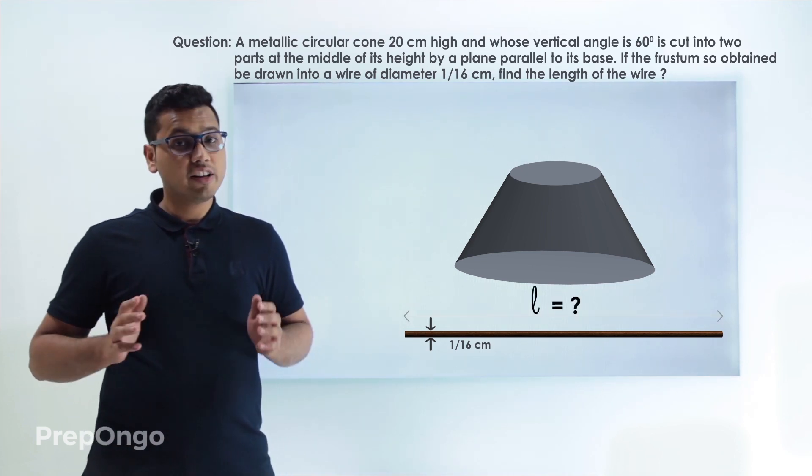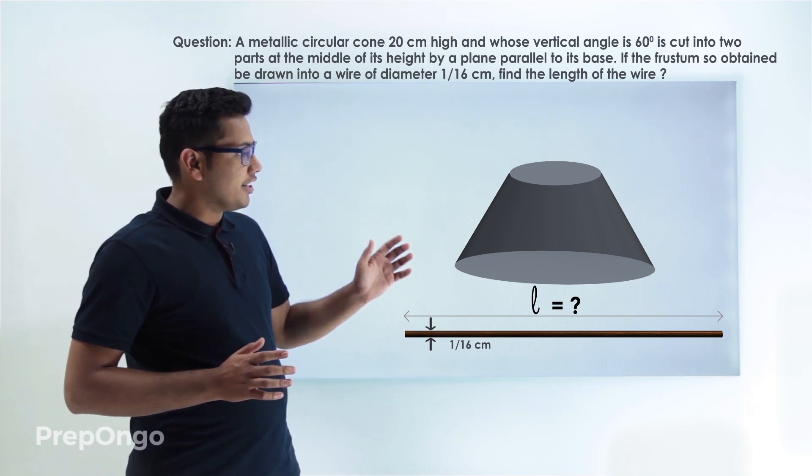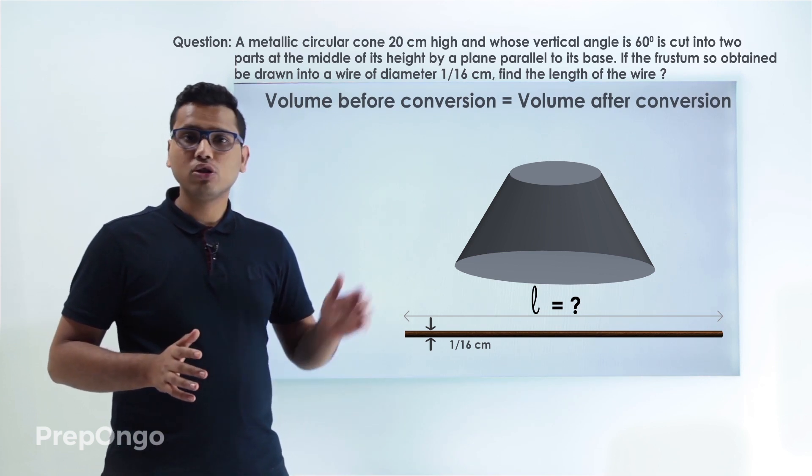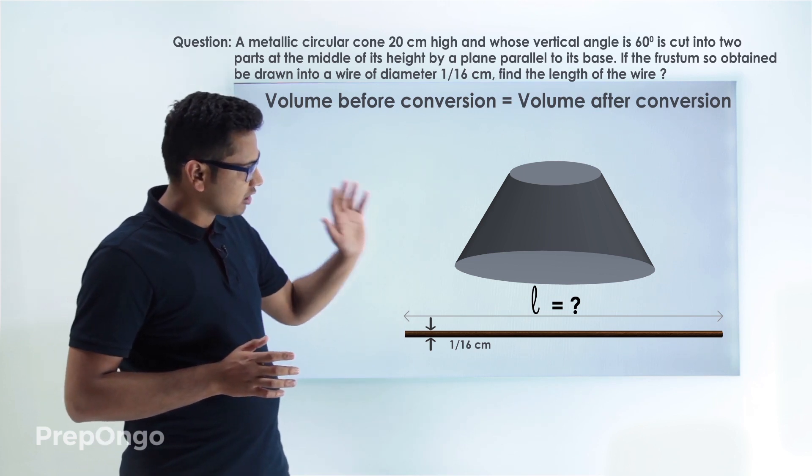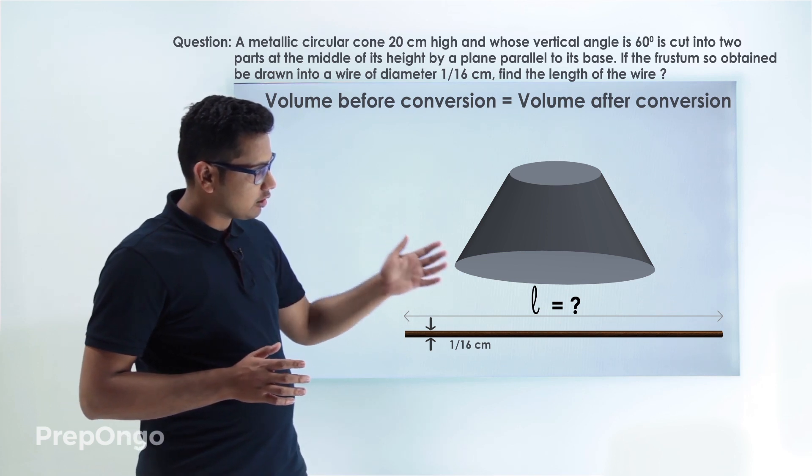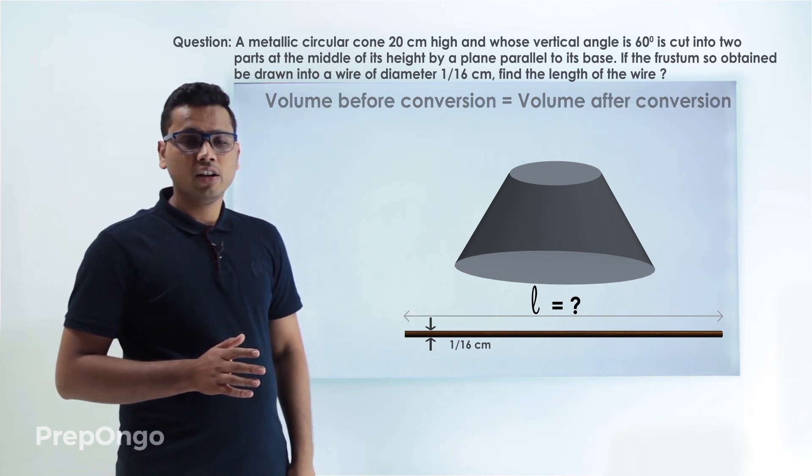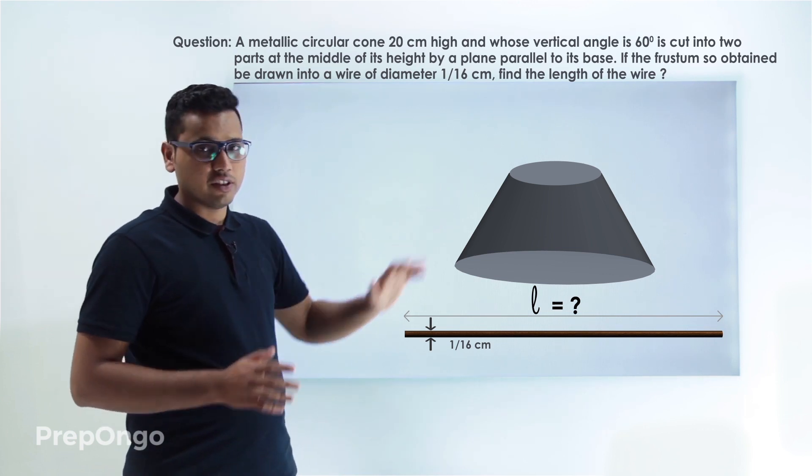Now if you remember that if we draw one figure into another solid then the volume in both cases remains the same. So we can find out the volume of this frustum and then we can equate it with the volume of the wire and get the value of length of the wire. So we can calculate the volume of frustum first.